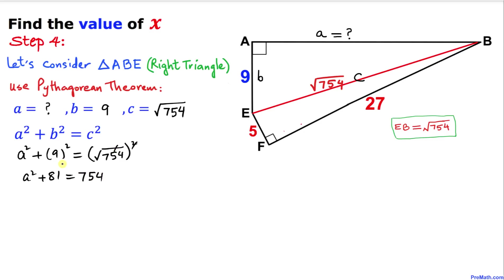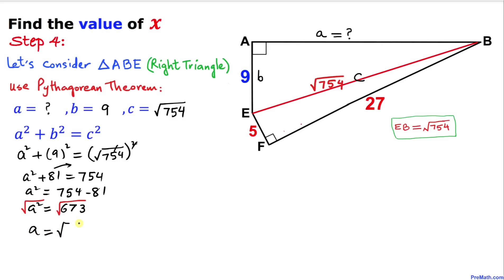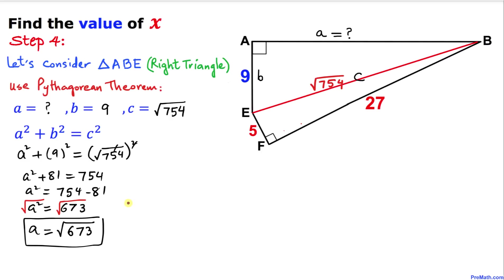Moving 81 to the right-hand side: a² = 754 − 81, so a² = 673. Taking the square root on both sides, a = √673. We know that this value of a is nothing more than line segment AB, so line segment AB turns out to be √673.